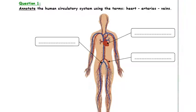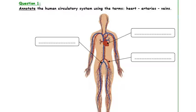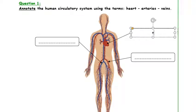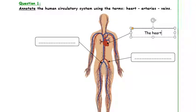Question 1: Annotate the human circulatory system using the terms heart, arteries, and veins. Where is the heart? This is the heart. Excellent! The heart is located in the chest under the ribcage, between the two lungs, and a little bit to the left.